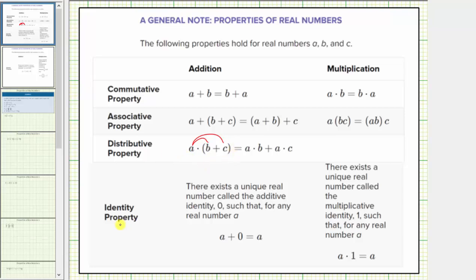Next is the identity property of addition and of multiplication. The identity property of addition states there exists a unique real number called the additive identity, zero, such that for any real number a, a plus zero equals a. The identity property of multiplication states there exists a unique real number called the multiplicative identity, one, such that for any real number a, a times one equals a.